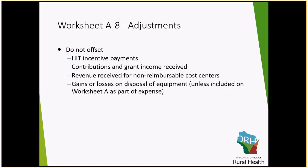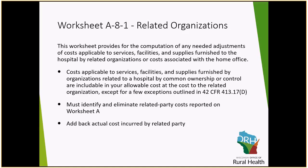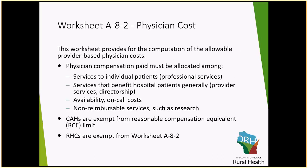Some items do not need to be offset as A8 adjustments because they are taken care of elsewhere on the cost report. HIT incentive payments, contributions or grant income, and gains and losses on disposable equipment do not need to be offset. Worksheet A81 covers cost allocation from home office costs. This isn't applicable to everybody, but if you do have a home office, this is where your related organization costs would be reported.